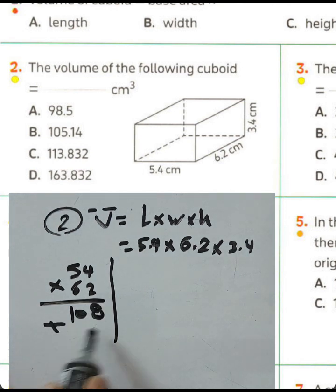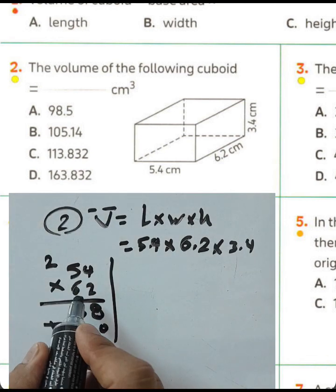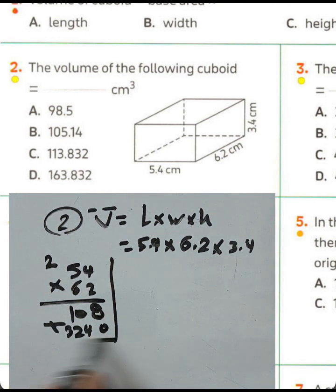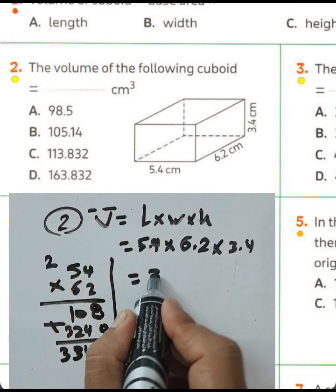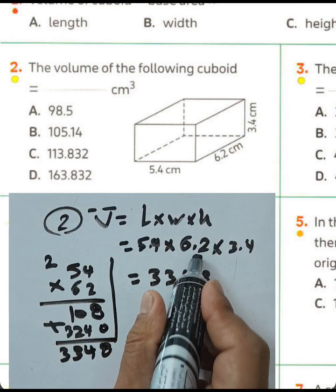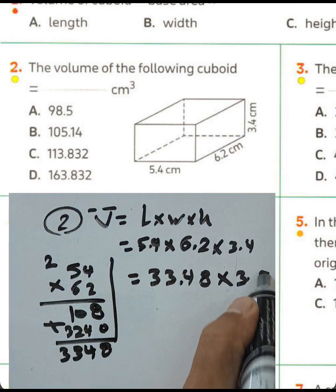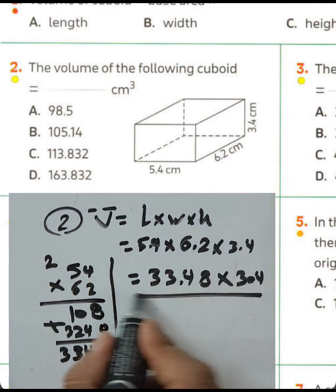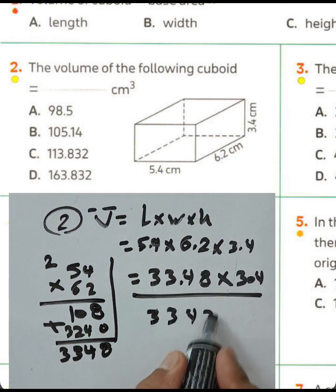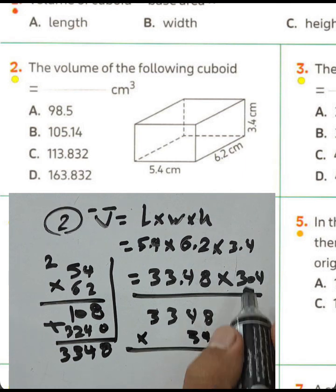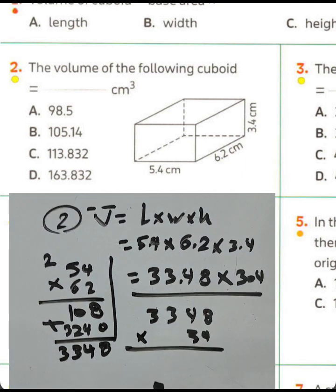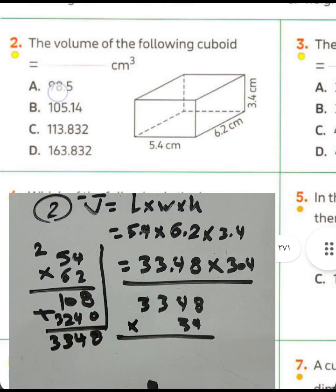First, multiply 54 by 62: 2 times 4 equals 8, 2 times 5 equals 10, 4 times 6 equals 24 (write 4 carry 2), 5 times 6 equals 30 plus 2 equals 32. The result is 3348, and the point goes after two decimal places. Then multiply by 3.4, giving the point after three places in the result.